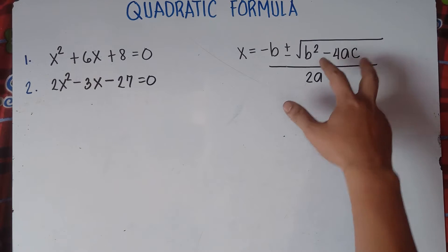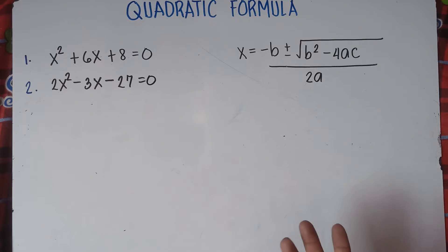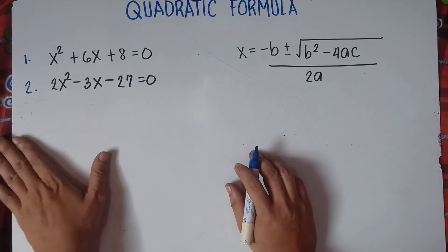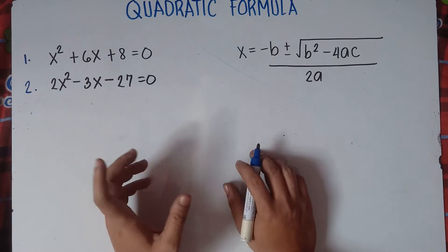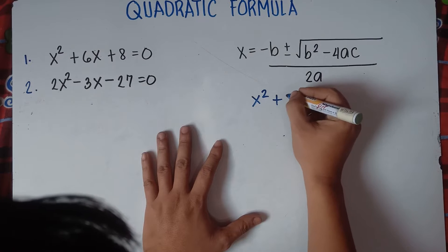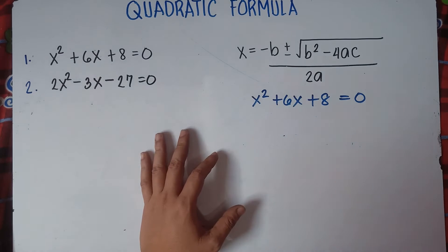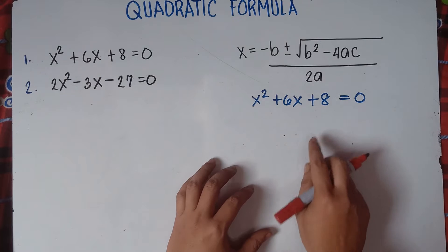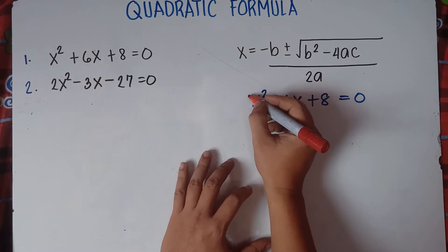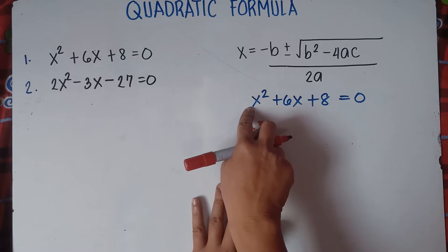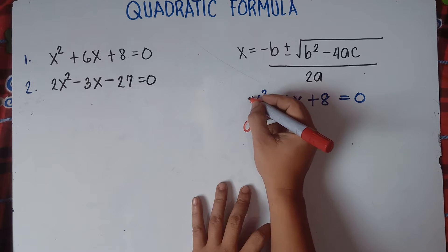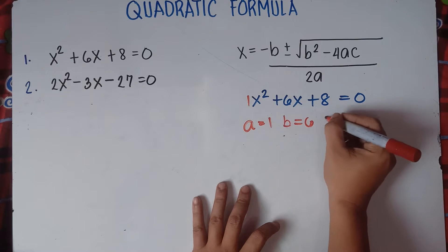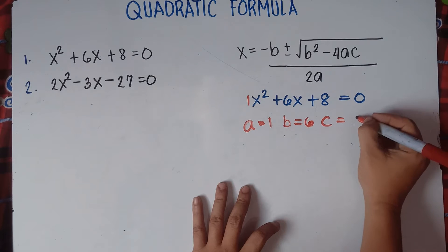For Part 1, when we solve for the square root, our answer is a perfect square, and it will be easy to find the roots. Let's start with number 1. First thing to do: copy the equation and get the value of a, b, and c, because we need to substitute those values into the quadratic formula. So our equation is x²+6x+8=0. Our a is beside x² — since there is no number before x², understood that a=1. Our b is beside x, so b=6. And our c is the constant, which is positive 8.